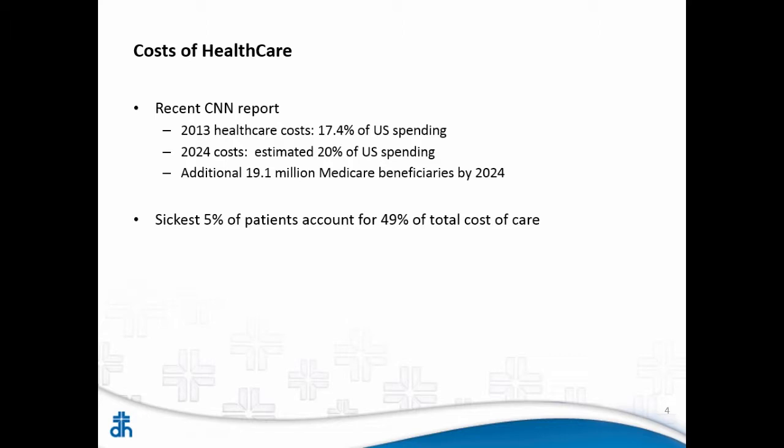We need to figure out how to spend that money more effectively — not necessarily spend less, but spend it more effectively. The money's there, we just have to do it efficiently. By 2024 it's estimated that 20% of GDP will be spent on healthcare — that rate is just not sustainable. There will be an additional 19 million Medicare beneficiaries by 2024. We're living longer, so more patients are going to be living with chronic diseases.